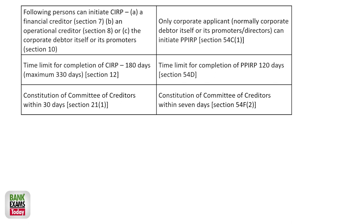Following persons can initiate a CIRP: financial creditors, operational creditors, corporate debtor itself, or the promoters. While in case of PPIRP, only the corporate applicant — or its promoters or directors — can initiate the PPIRP. Operational creditors cannot file a PPIRP. The time limit is also different: 180 days, which can be a maximum of 330 days in case of CIRP, but in case of PPIRP it is 120 days — it takes a lot less time.